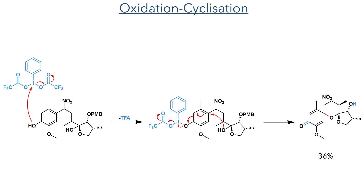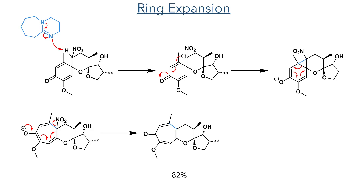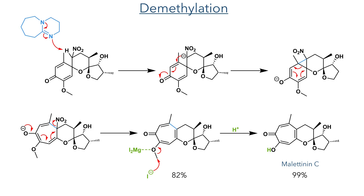It was at this point that the desired diastereomers were separated and taken forward to the ring expansion. The compound was reacted with DBU, which deprotonates the molecule on the carbon bearing the nitro group. This undergoes a Michael addition into the dienone, forming a three-membered ring. Instead of reprotonation, this enoxide intermediate undergoes a ring expansion, breaking open the cyclopropane to generate the seven-membered ring, then eliminates the nitro group to form the desired tropone in an 82% yield. With the tropone ring now formed, a simple demethylation using magnesium iodide completed the synthesis of malatinin C in 99% yield.